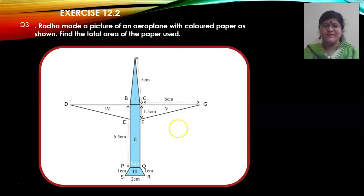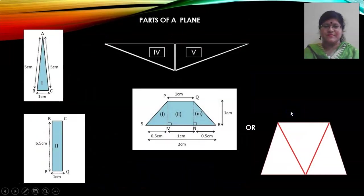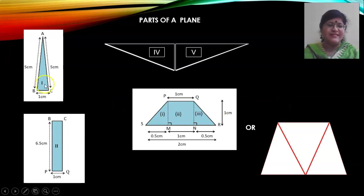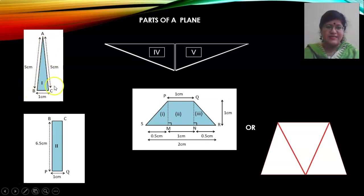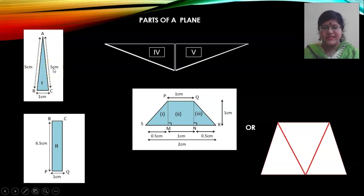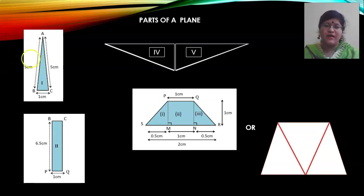Let us see how to do it. These are the parts of the plane — I have just segregated it. This is the nose of the plane. If you look at the nose of the plane, it is an isosceles triangle because AB is given as 5 cm, AC is mentioned as 5 cm, and the base is 1 cm. So two sides of this triangle are equal. But since the height is not known, you will use Heron's formula to find the area of part 1.